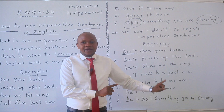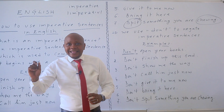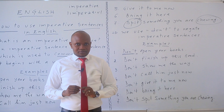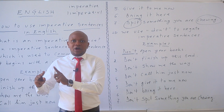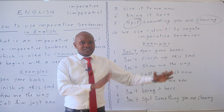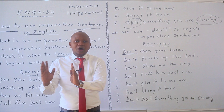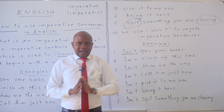The third example: bring that material — imperative affirmative. Don't bring that material — imperative negative. Build this house right now — imperative affirmative. Don't build this house right now — imperative negative. Open all doors — imperative affirmative. Don't open all doors — imperative negative.